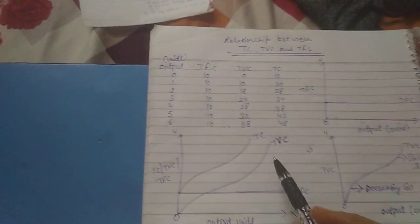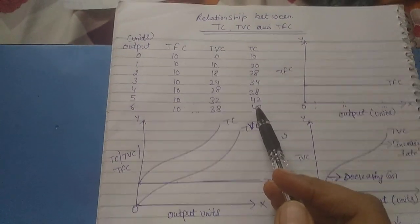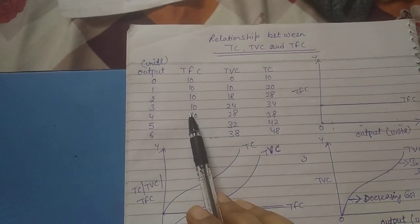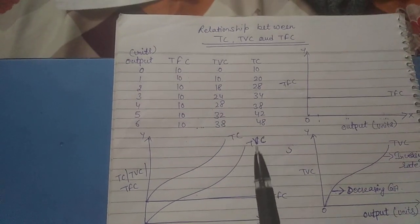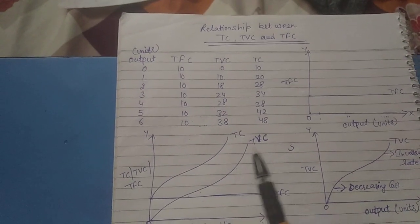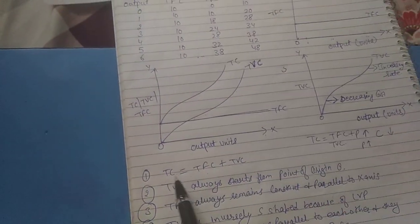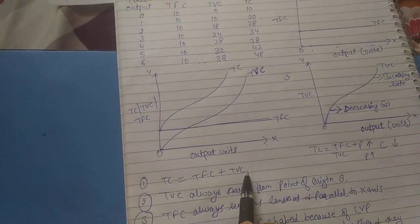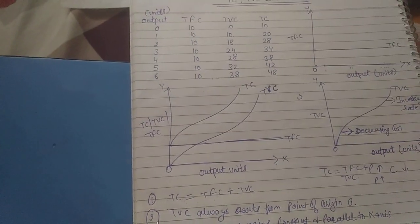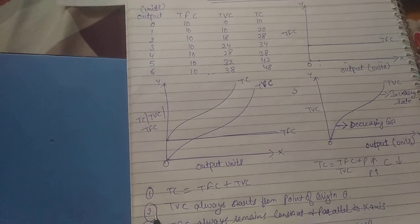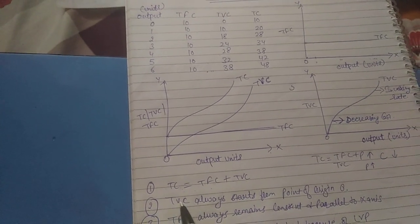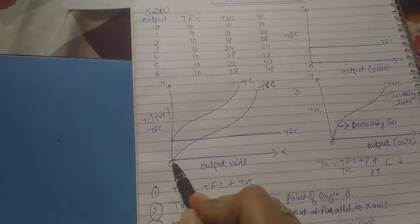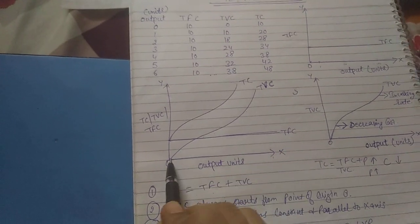Now the next one is total cost. Total cost is the sum of total fixed cost and total variable cost. So the first point under the relationship is: TC = TFC + TVC. The second point is that TVC — total variable cost — always starts from the point of origin.